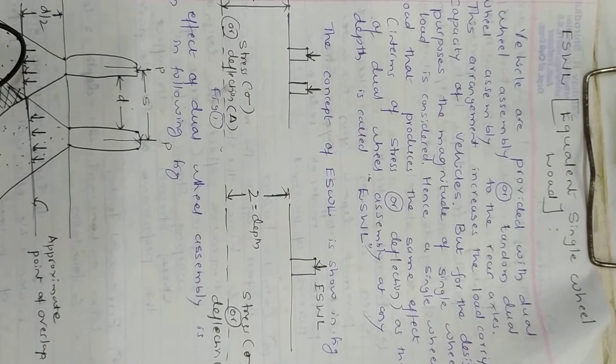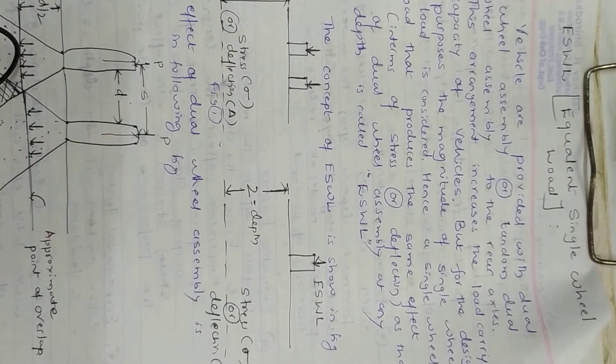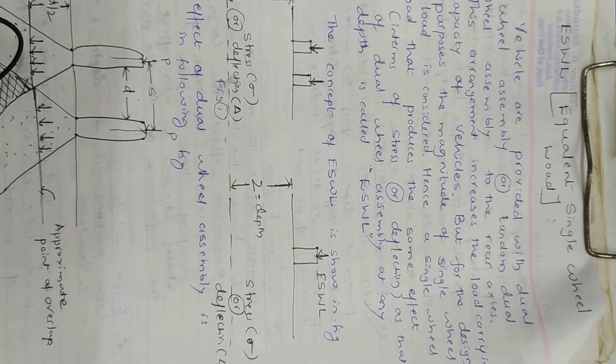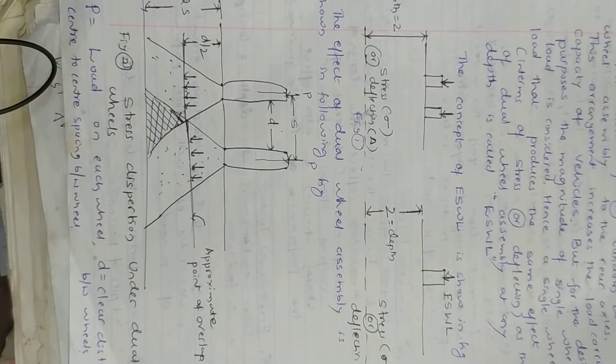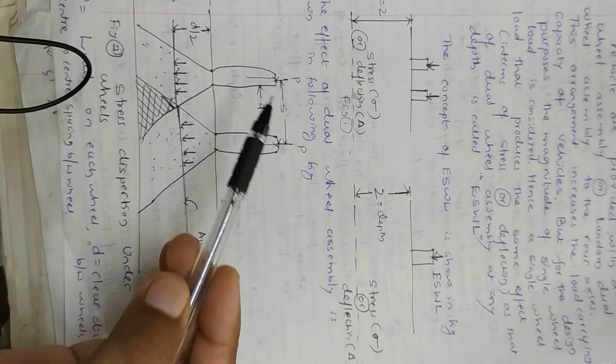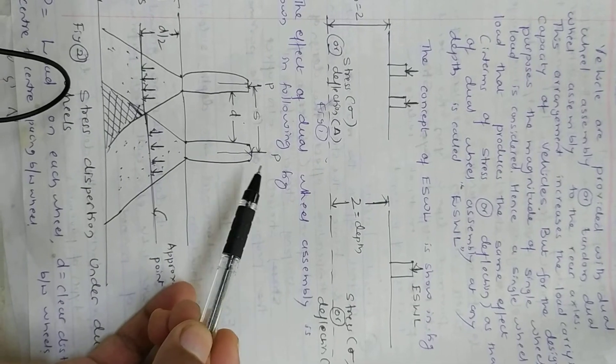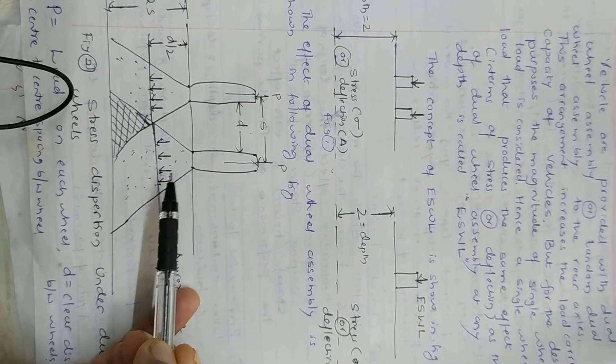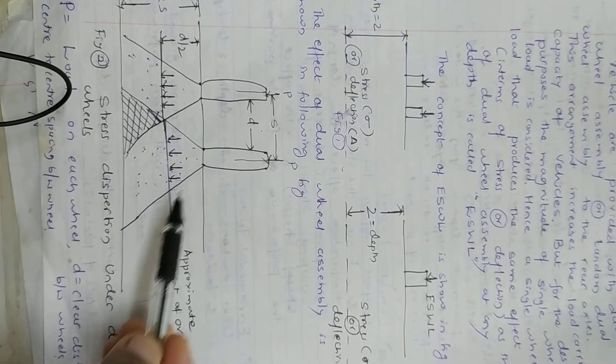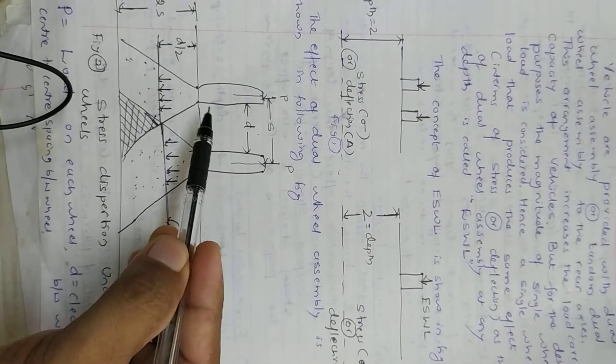Good morning, today we will discuss ESWL - Equivalent Single Wheel Load concept. This is very important from an examination point of view. You can see this diagram, Figure 2. These are the two wheels, the load acting on the surface of the pavement, and the angle of stresses developed inside the pavement surface at 45 degrees.